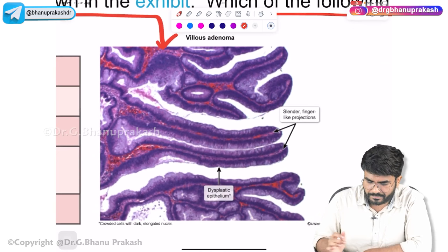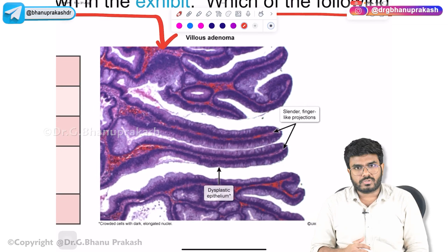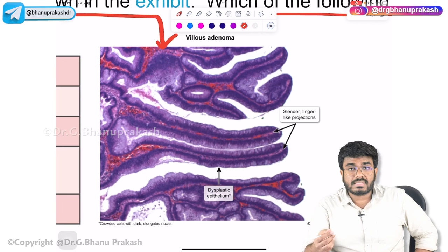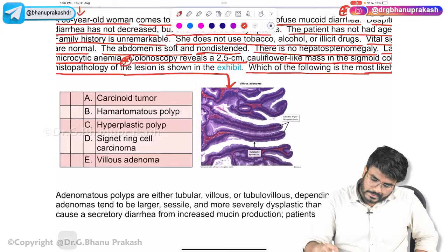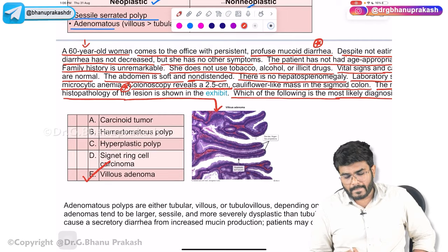Looking at the histopathology, the tissue appears as finger-like projections — fingers mean villi. This is a villous adenoma. Villous adenomas have more risk of turning into cancers. So the diagnosis here is definitely villous adenoma.